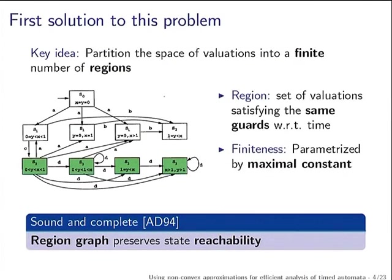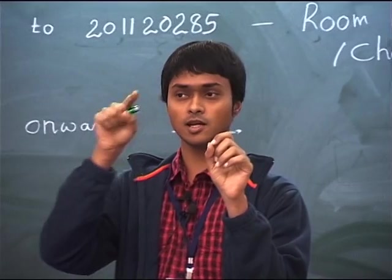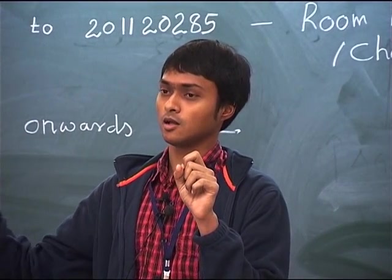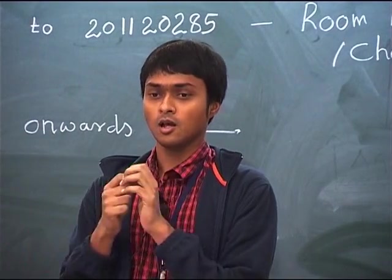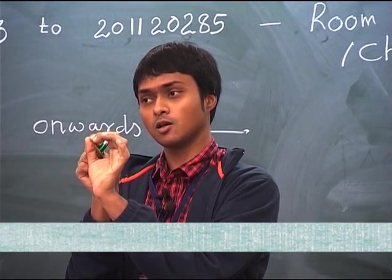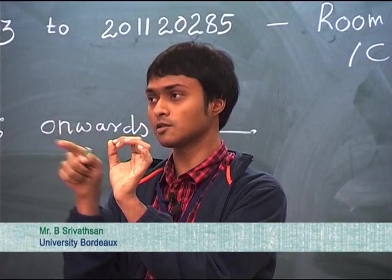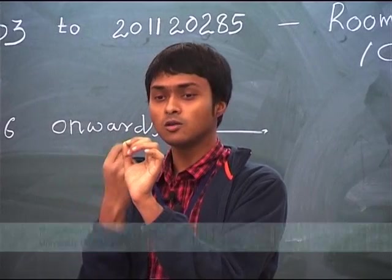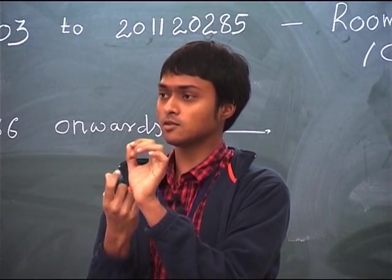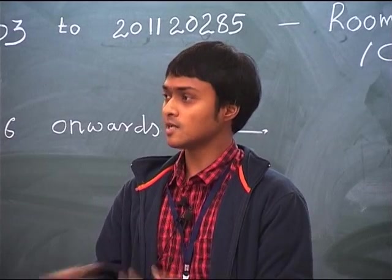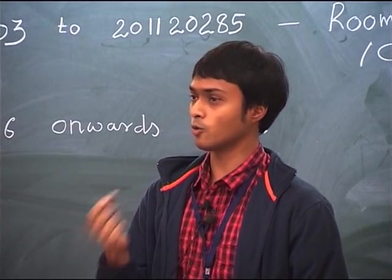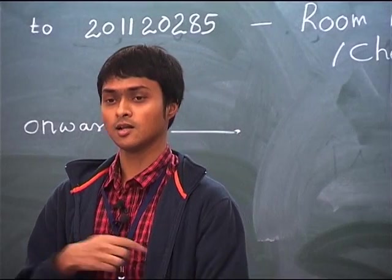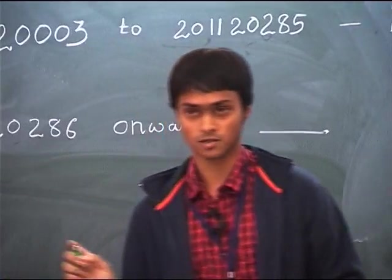Just a small recap of the solution — where does the challenge lie? Given an automaton you want to know, starting from the initial state, can you play a path till the accepting state. At each step of this path you want to know if the following transition is enabled or not, and to know that you need to know what the clock valuations are at that point.